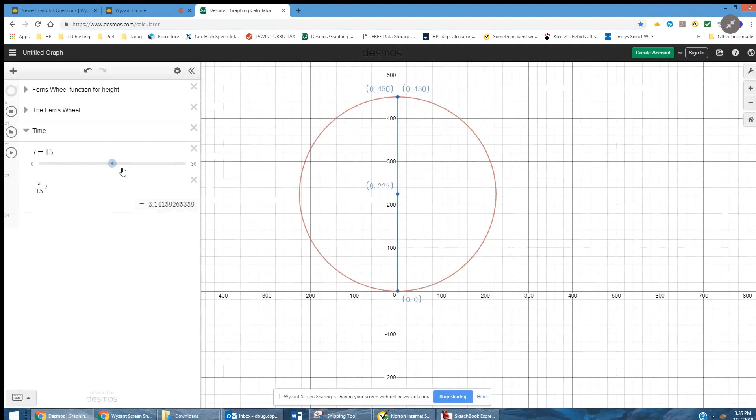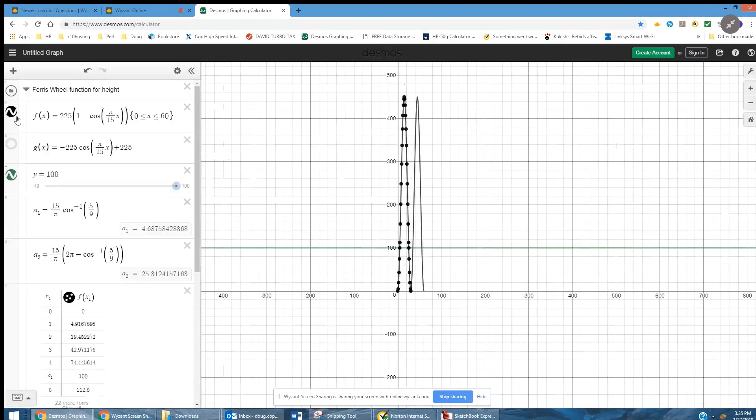Okay, now what does the graph of that function look like? Let me hide this, enable this, and let's see what's in here.